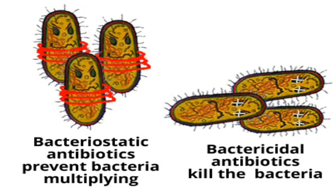So to summarize: bactericidal agents kill the bacteria, and bacteriostatic agents prevent or inhibit the growth of bacteria. For bactericidal agents, for example, cell wall synthesis inhibitors — the main drug categories include penicillin, cephalosporin, et cetera. When cell wall synthesis is inhibited by these bactericidal agents, that leads to damaging of the cell wall or cell membrane, causing the contents inside the bacterial cell to pour out.